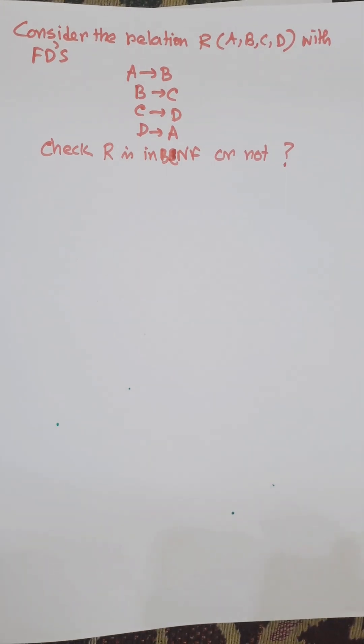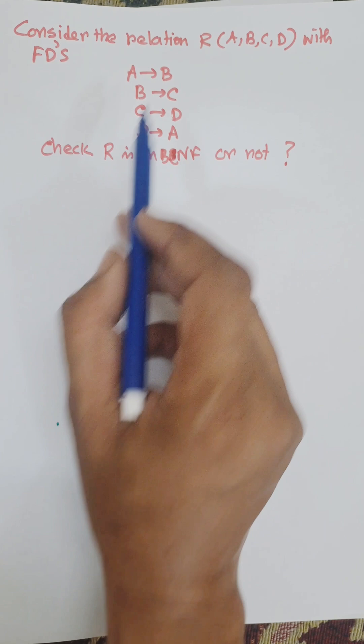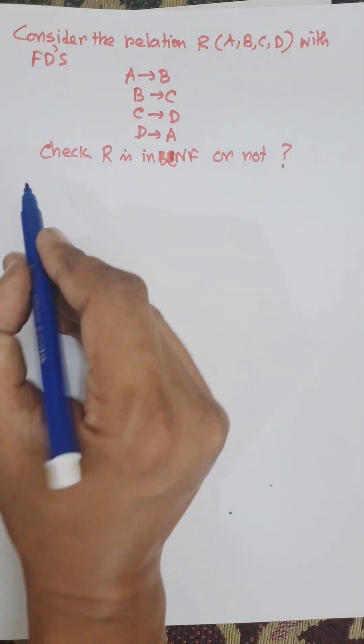In this video, I am going to check if a relation is in BCNF or not. Here R = ABCD with functional dependencies A→B, B→C, C→D, D→A. We need to check whether R is in BCNF or not.